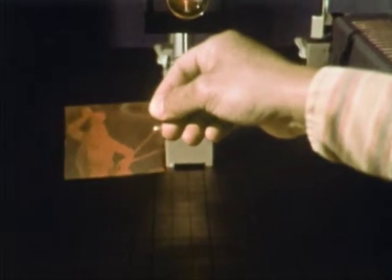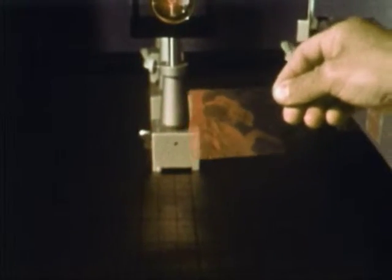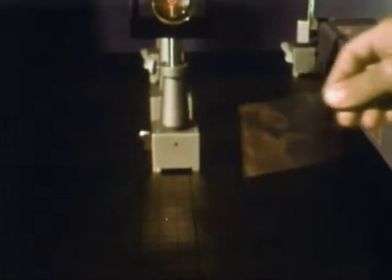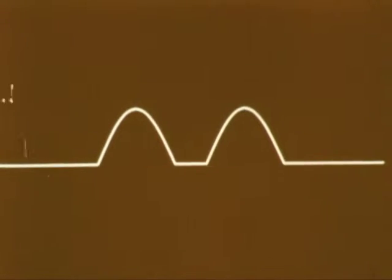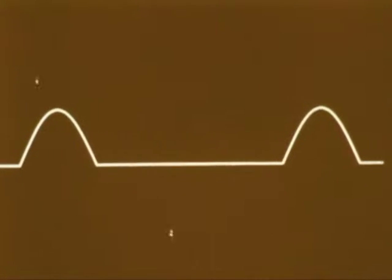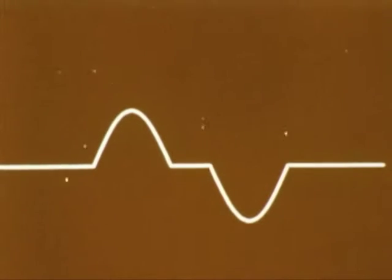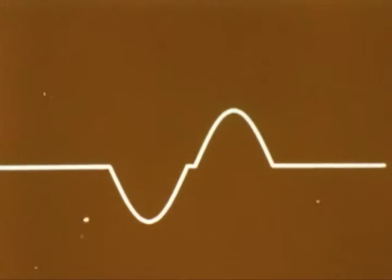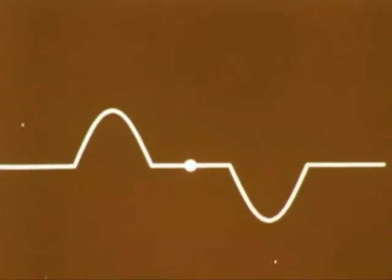In order to understand holography, you have to understand something about waves. When waves meet, their effects are additive. When two crests meet, we get an increased effect. But when crest meets trough, their effects cancel out. This interference effect is important in holography.